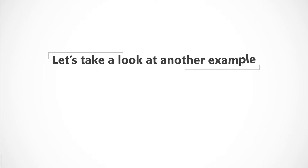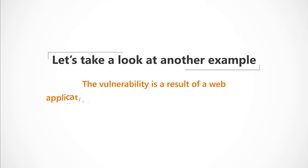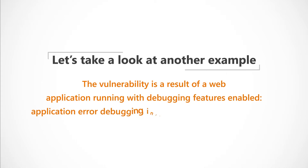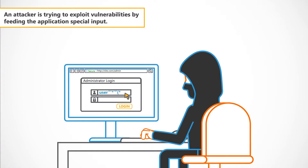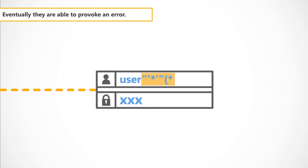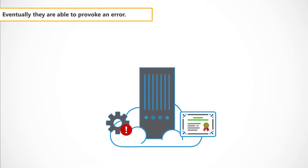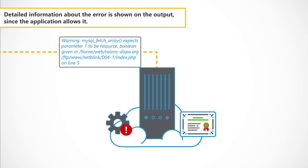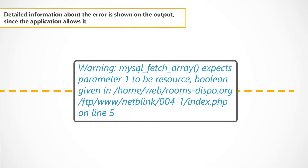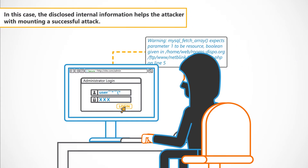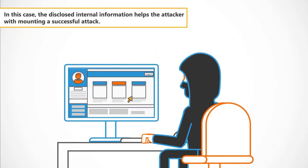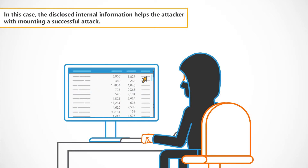Let's take a look at another example. This time, the vulnerability is a result of a web application running with debugging features enabled. Application error debugging information is displayed to users. An attacker is trying to exploit vulnerabilities by feeding the application special input. Eventually, they are able to provoke an error. Detailed information about the error is shown on the output since the application allows it. In this case, the disclosed internal information helps the attacker with mounting a successful attack.